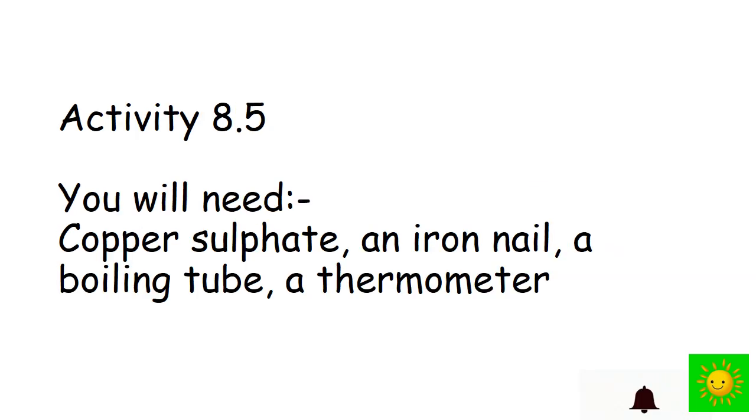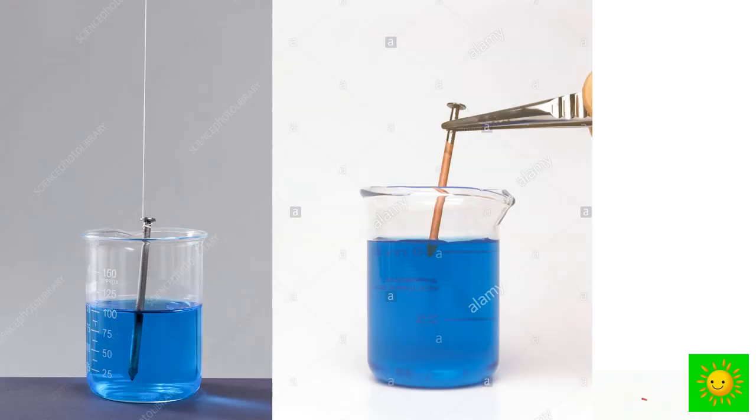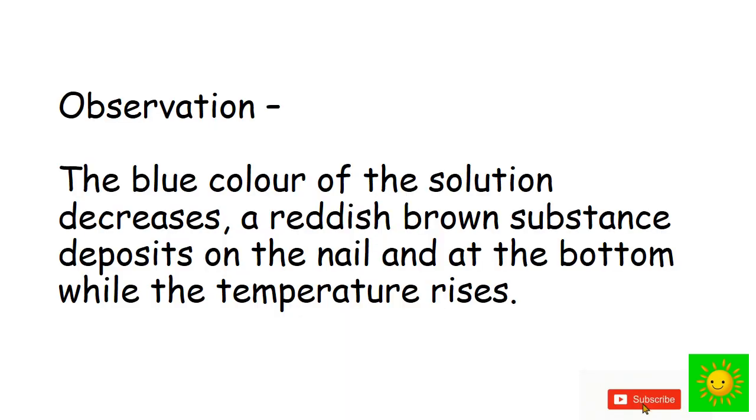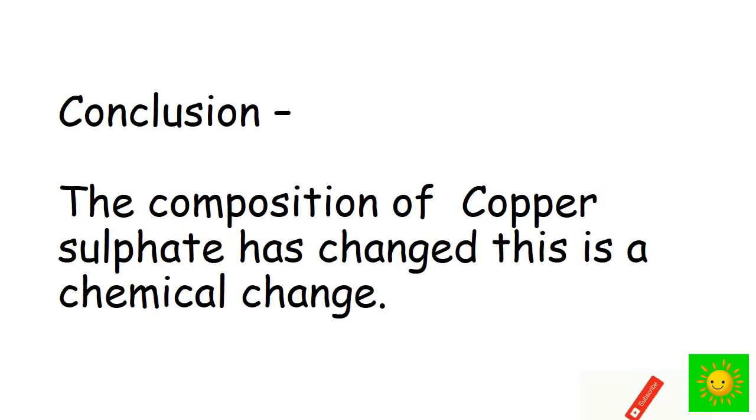Next practical. We need copper sulfate, an iron nail, a boiling tube, and a thermometer. Add water and copper sulfate crystals to the boiling tube and prepare a light blue solution. Put the clean iron nail into it. When a clean iron nail is placed in copper sulfate solution, you would observe that the blue color decreases. A reddish brown substance deposits on the nail and at the bottom of the water while the temperature rises. The composition of copper sulfate has changed. This is a chemical change.